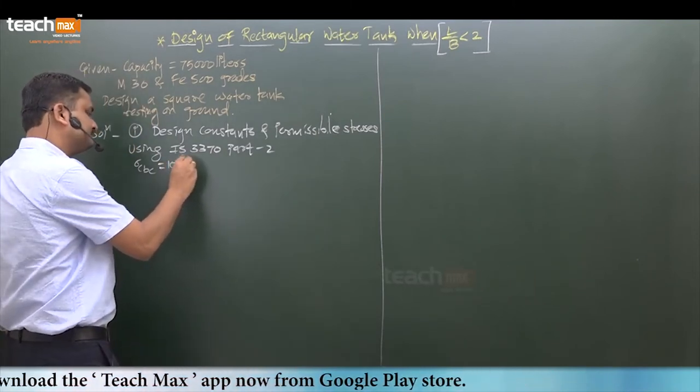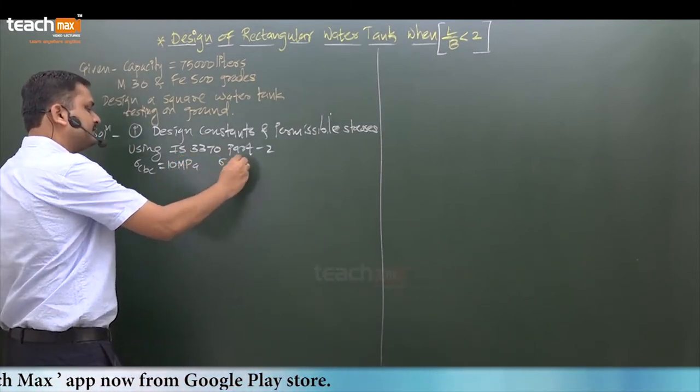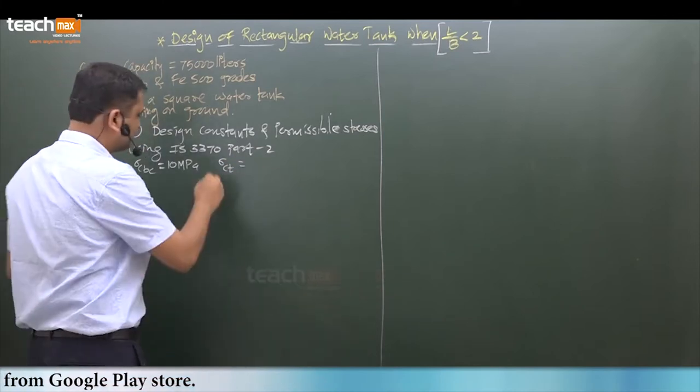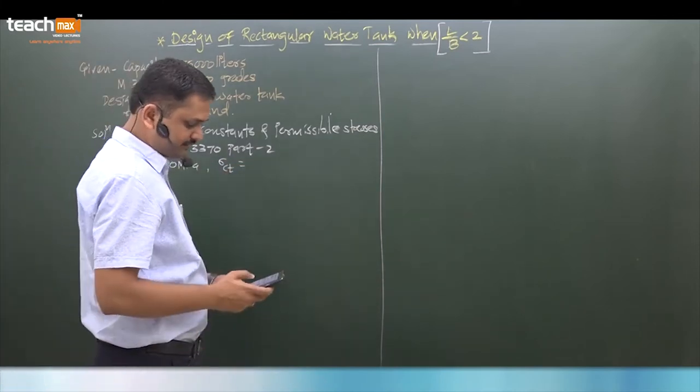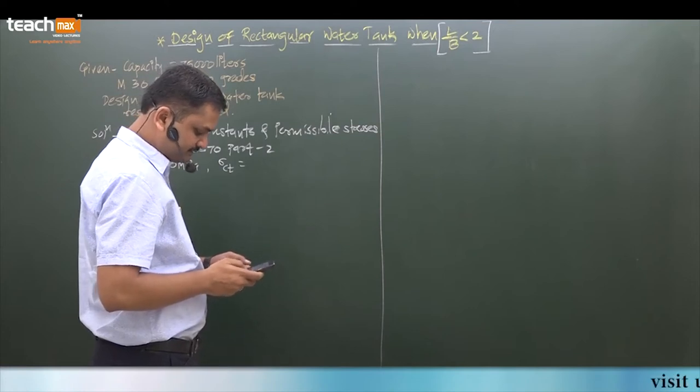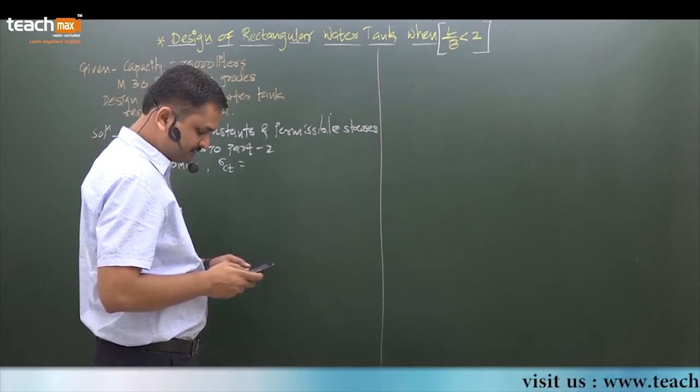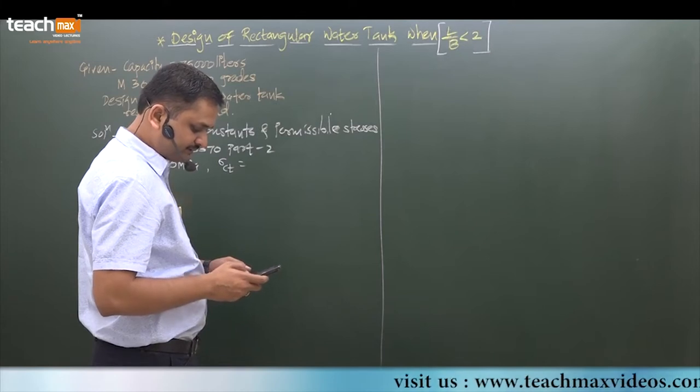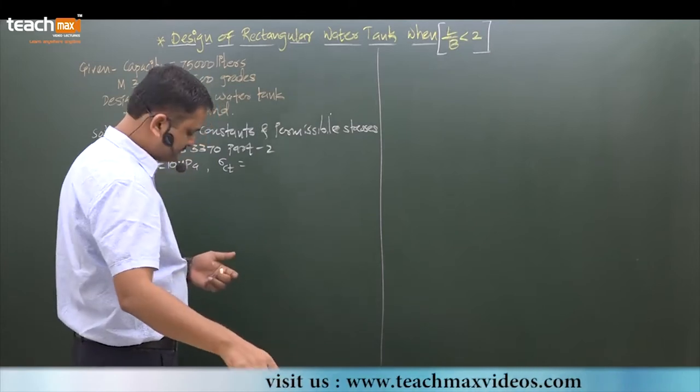This value is 10 MPa. Sigma CT is not required but we will still write it. For M30, I think it is given in table number 1, and it is 1.5 for direct tension.